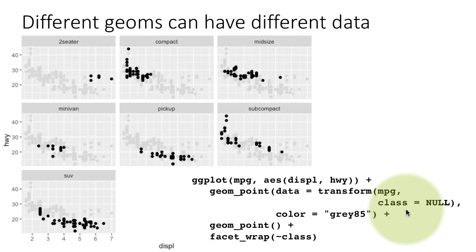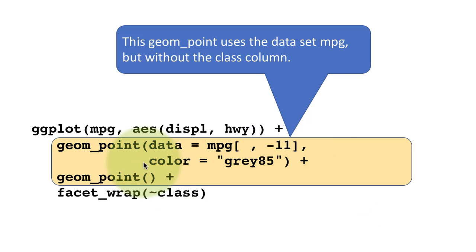That is why this particular layer of the gray points is not faceted—because the variable based on which the facet is being done is not even present in the data for this layer. I have shown it in a slightly different way here. Instead of using class equals null and the transform function, I'm saying the data for this layer is data equals mpg comma minus 11. The 11th column is the column called class. I'm saying forget that column, take it out of this layer.